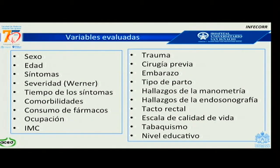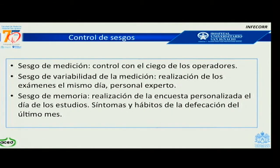Las variables analizadas fueron: edad, sexo, severidad, síntomas, comorbilidades, antecedentes quirúrgicos, antecedentes ginecobstétricos en mujeres, y hallazgos en la manometría y en la ultrasonografía endoscópica. Los sesgos se controlaron de la siguiente manera: el sesgo de medición se controló haciendo ciegos a los operadores de la manometría, la ultrasonografía y la encuesta, de modo que nunca se conocían los resultados de los dos estudios al momento de la realización. La variabilidad se controló realizando todos los estudios el mismo día del examen — historia clínica, tacto rectal y los otros dos exámenes. El sesgo de memoria se controló con una encuesta sobre síntomas y hábitos de defecación del último mes.